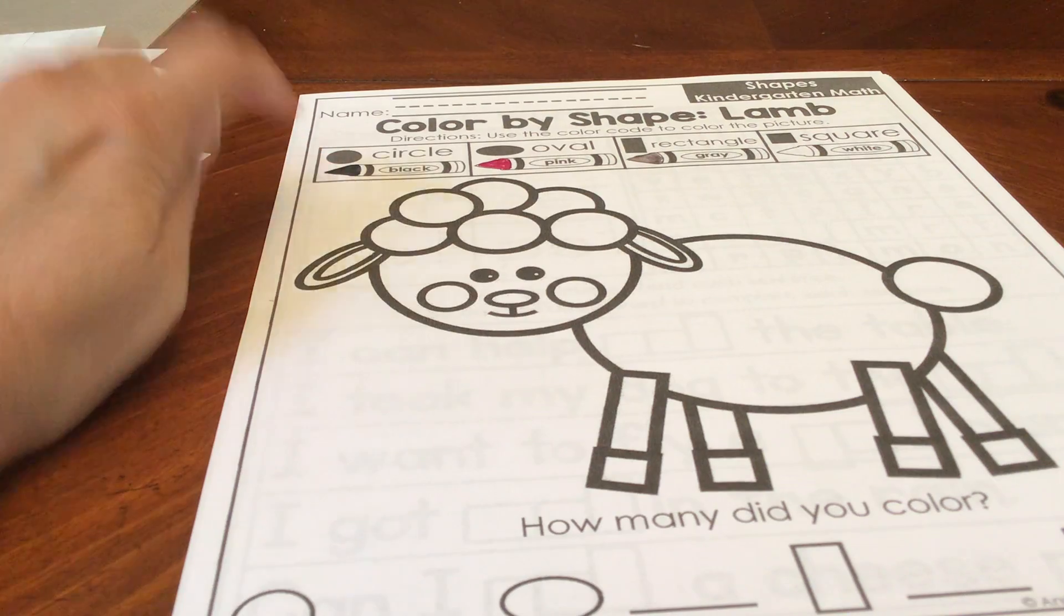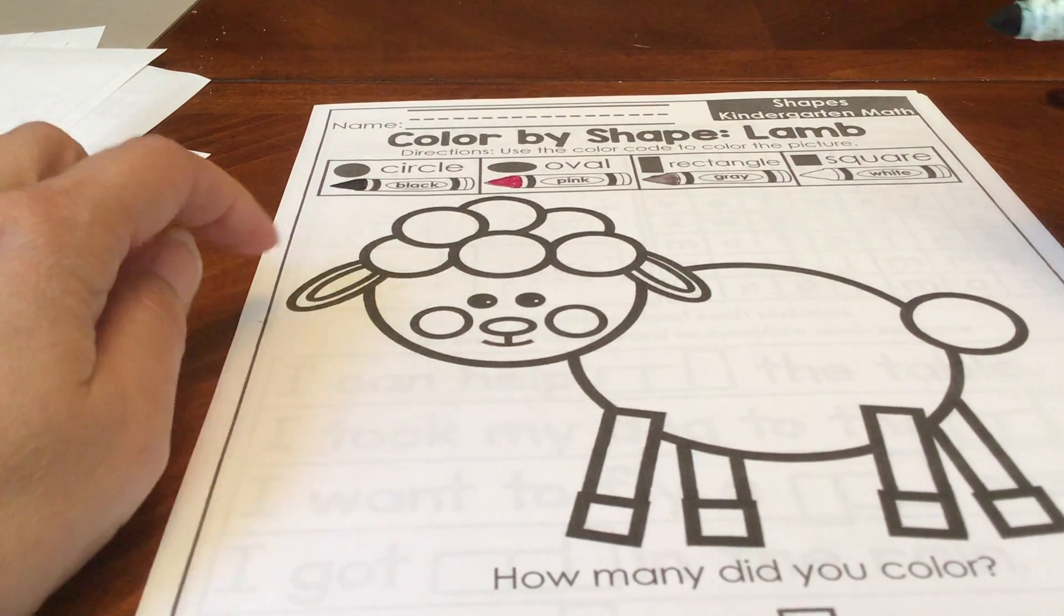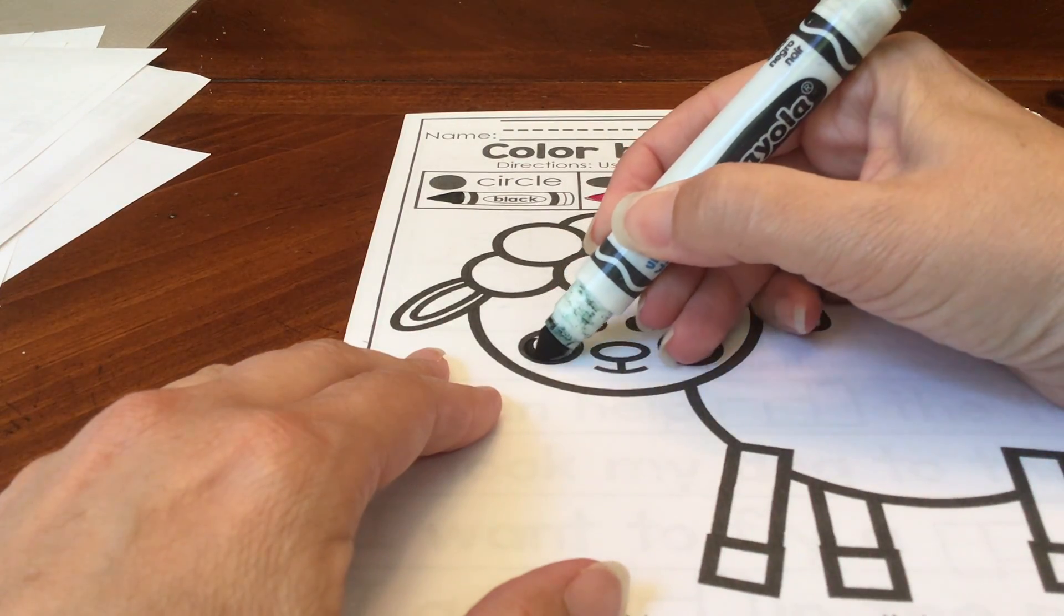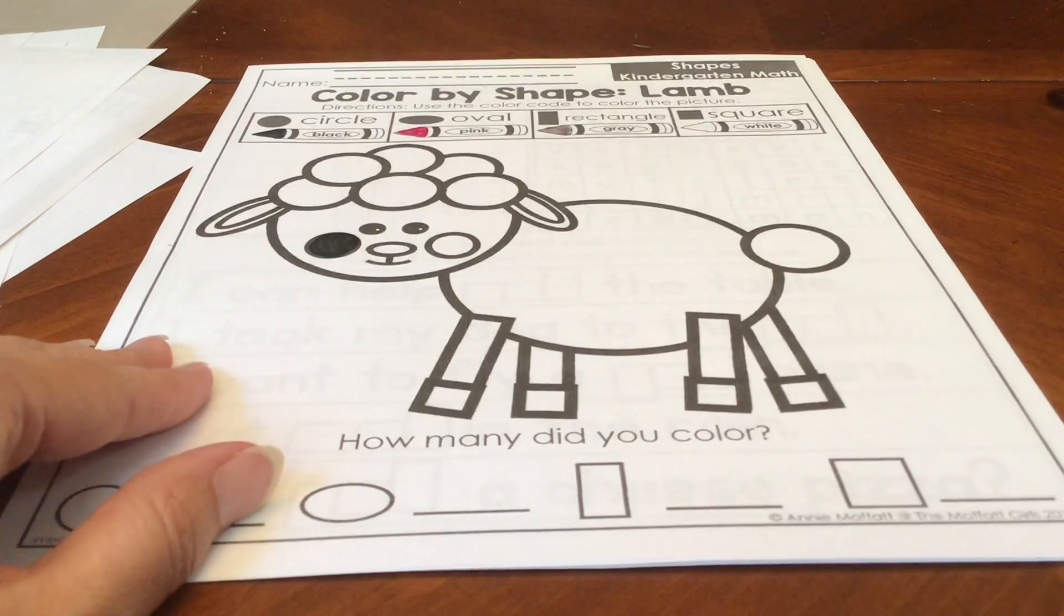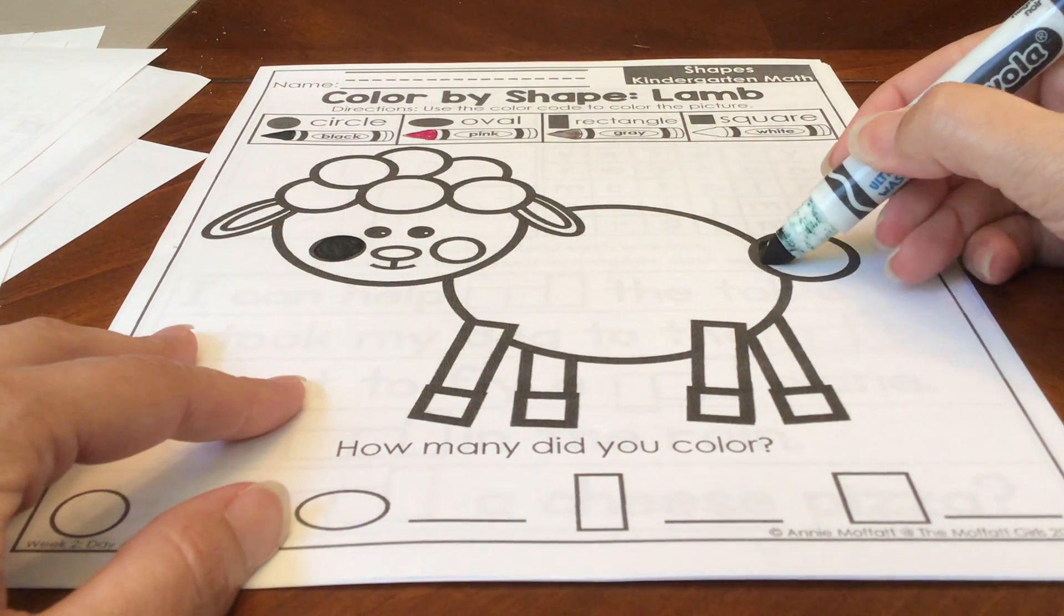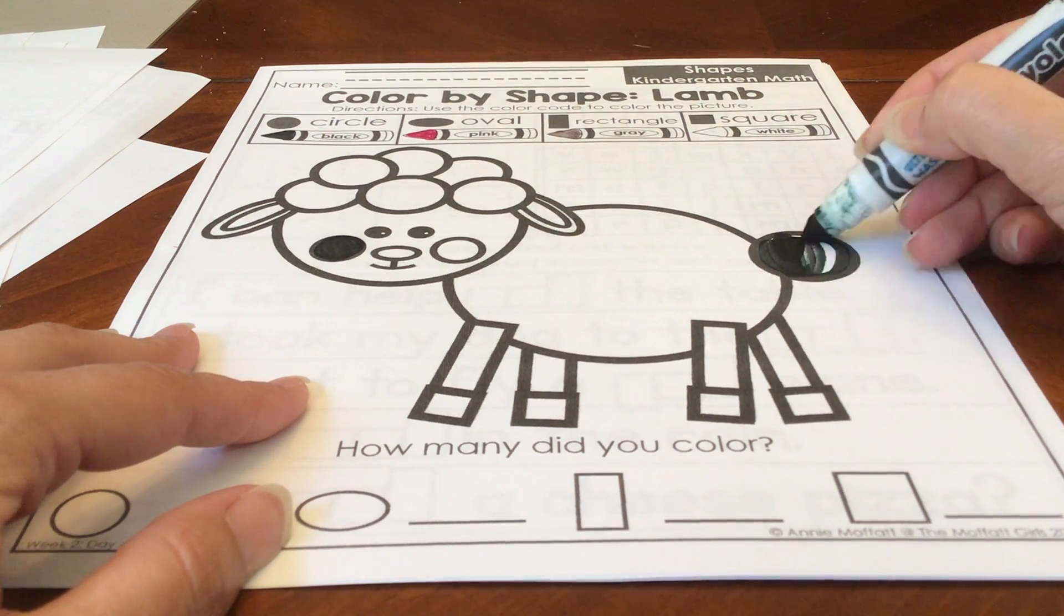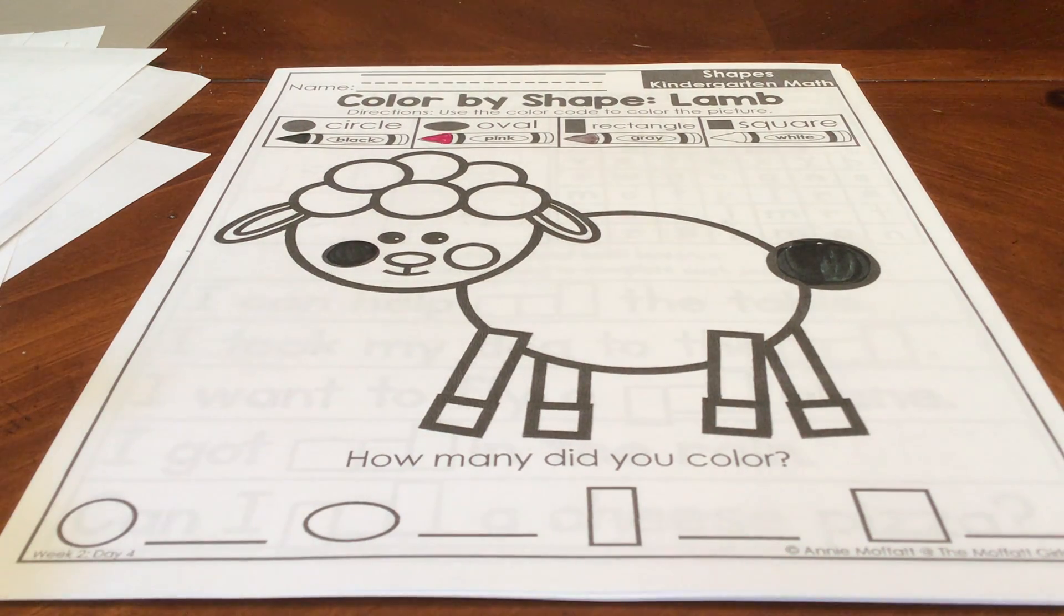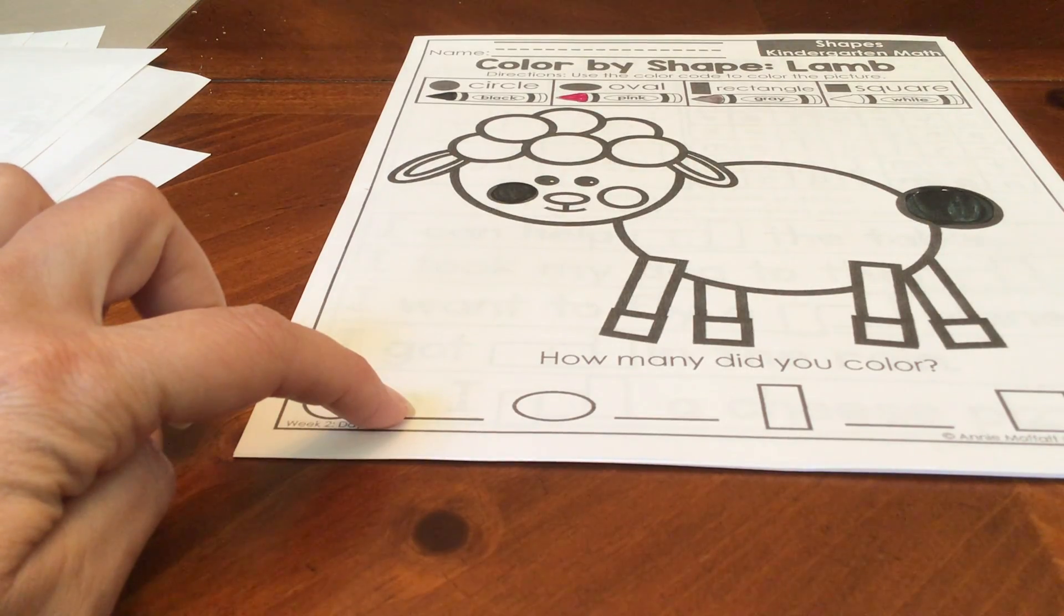I'm going to find a circle in my picture to color and I'm going to color it black. Let's see. Here's a circle. I can color this circle black. Here's a circle. I can color this circle black. Find all the rest of your circles and color them black. Then you're going to count how many circles there are and you're going to write that number on the line.